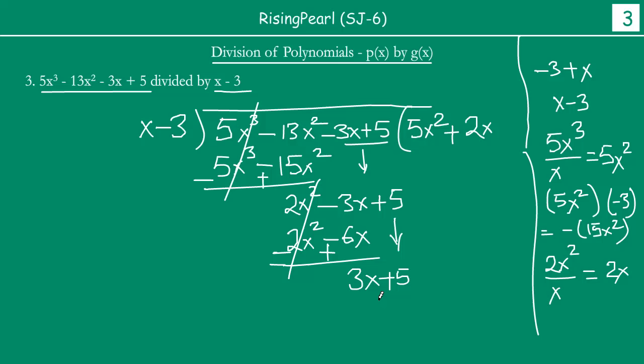And then 6x minus 3x will give you 3x plus 5. This 5 comes down. Now you have 3x plus 5. Then we divide the first term of dividend 3x by x. So this gives us 3. x cancels out, we get 3. So now we write the third term as 3. So then you multiply 3 with all the terms of the divisor. So we get 3x and 3 times minus 3 is minus 9. So we subtract this out. These cancel. And then 5 plus 9 is 14.